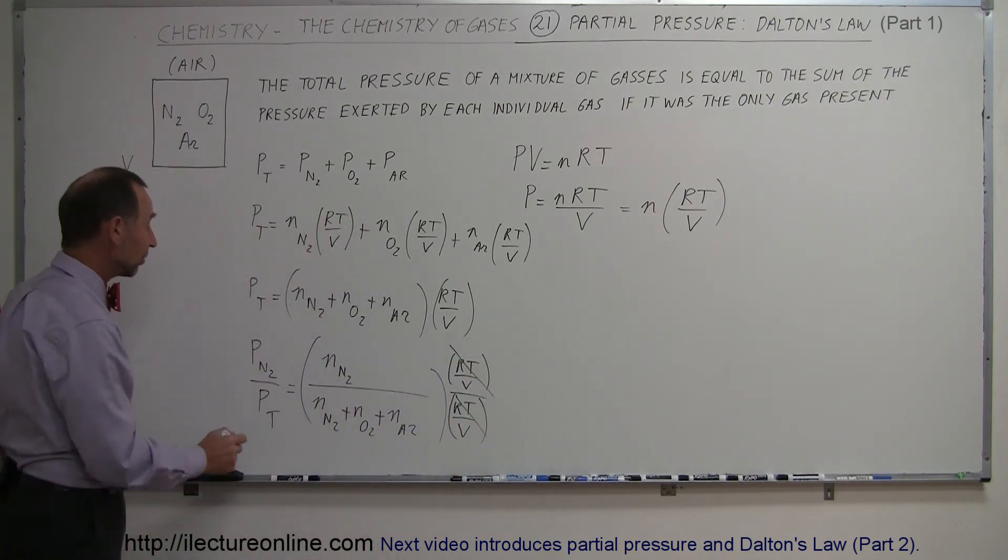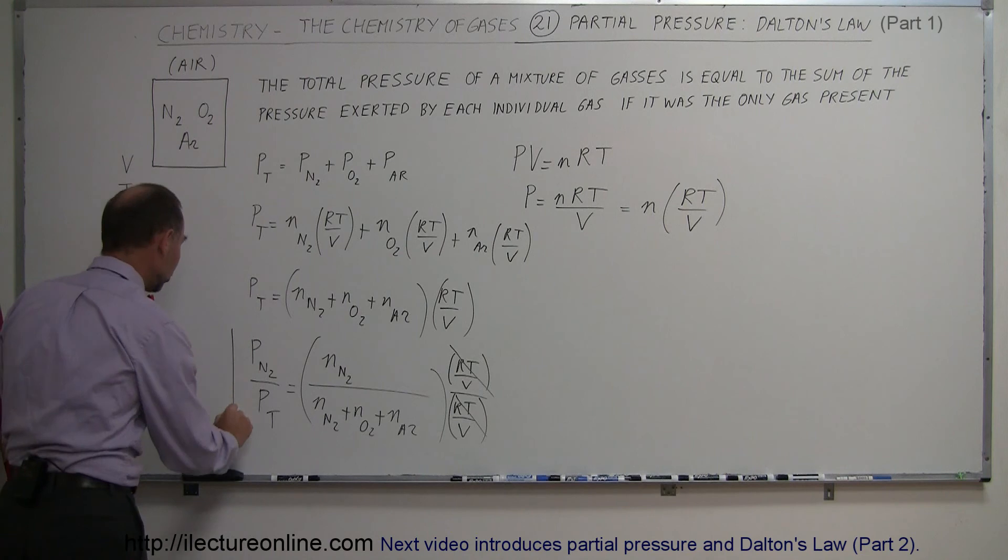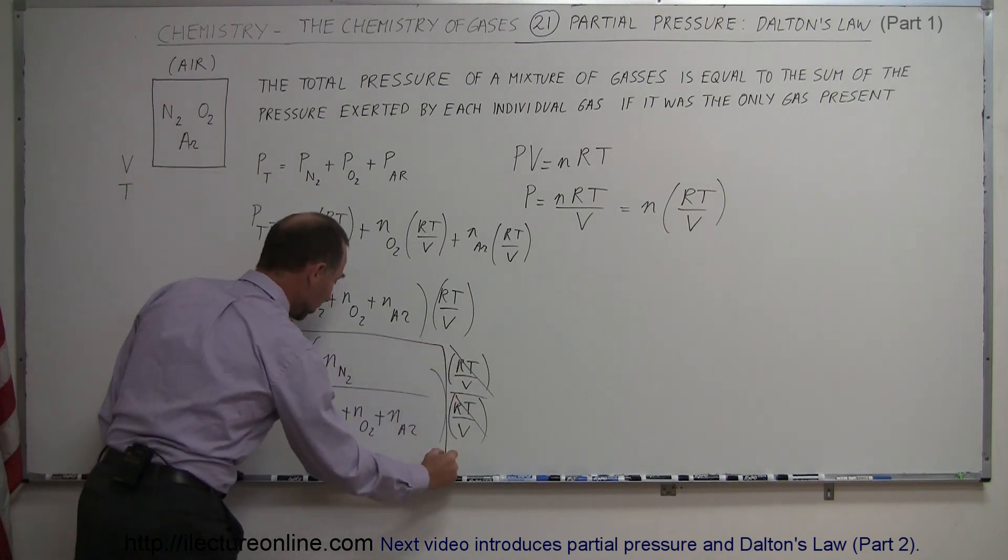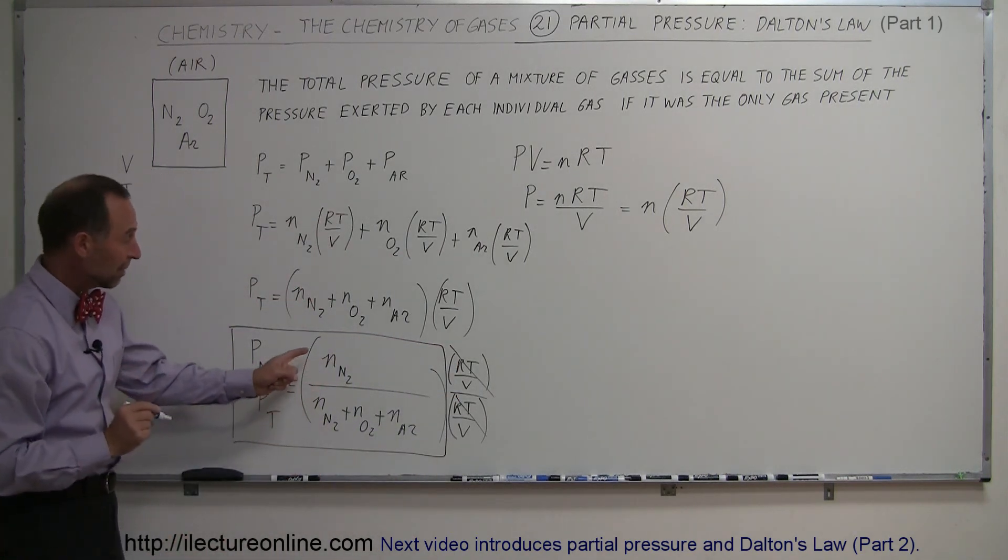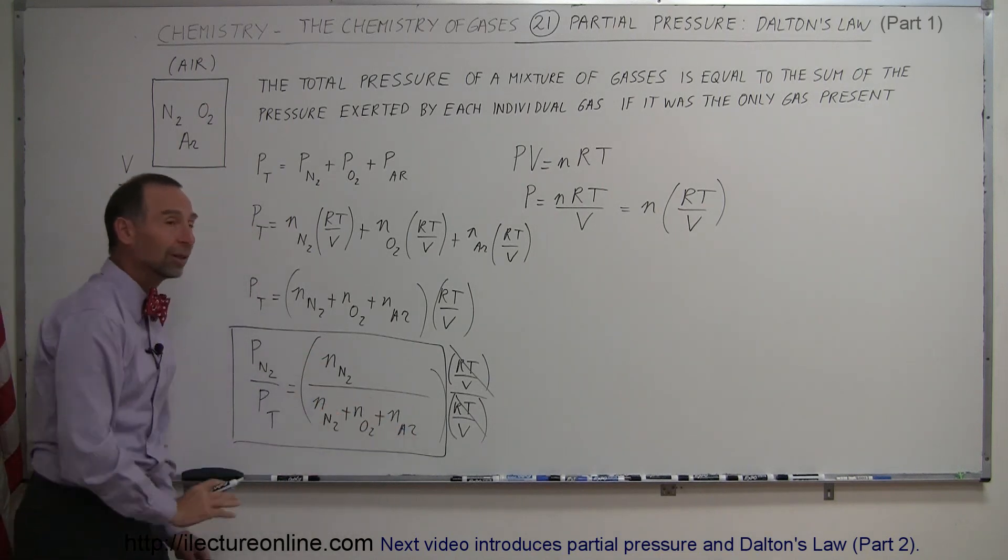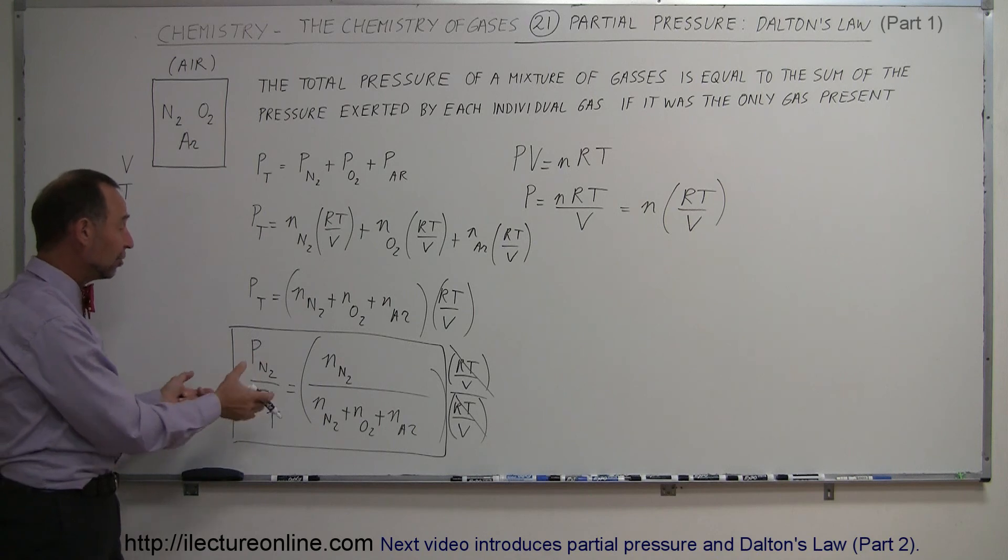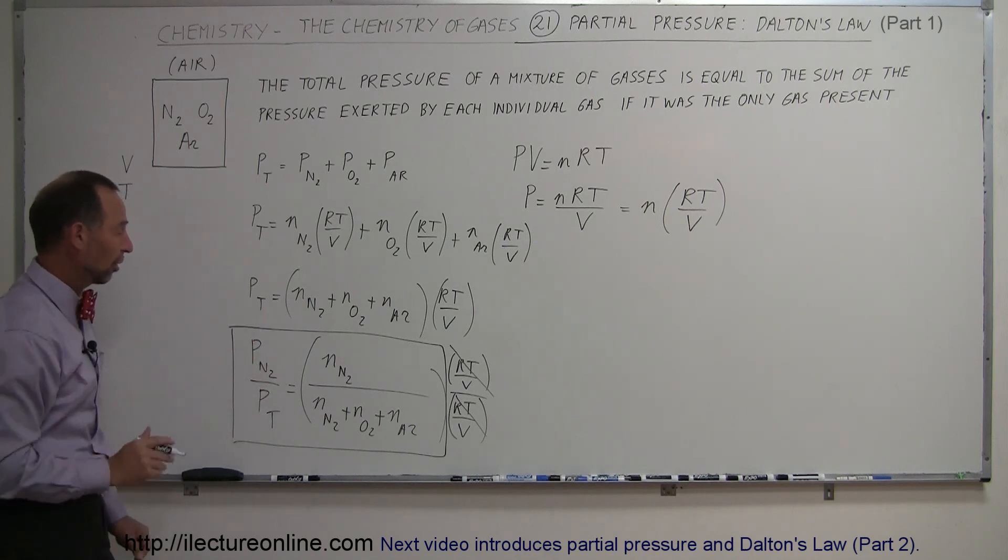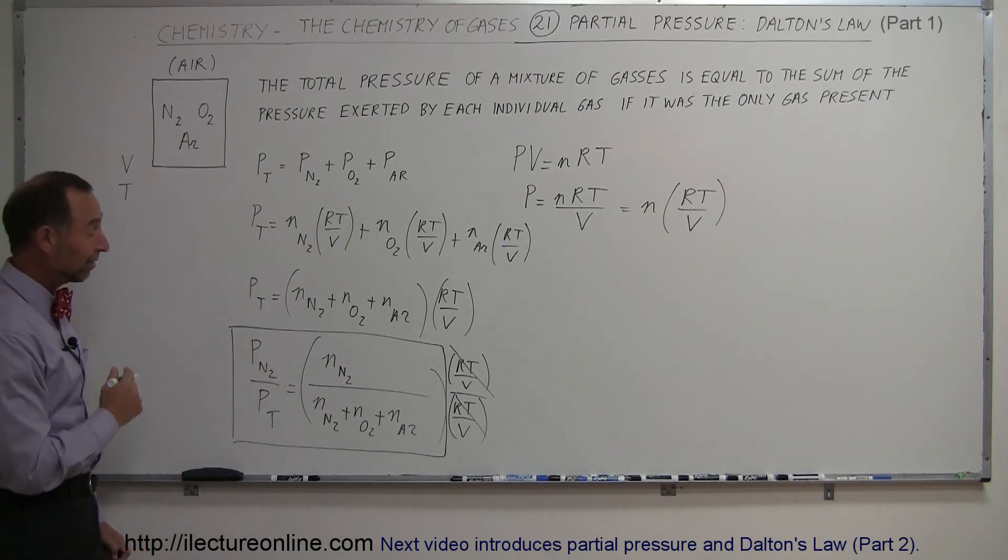And now you can simply see that to calculate the partial pressure of any gas in a mixture, all you have to do is figure out how many moles of that particular gas you have and divide it by the total number of moles in all of the gas, and that gives you the ratio or the partial pressure of the gas you're looking for. And that's as simple as it gets.